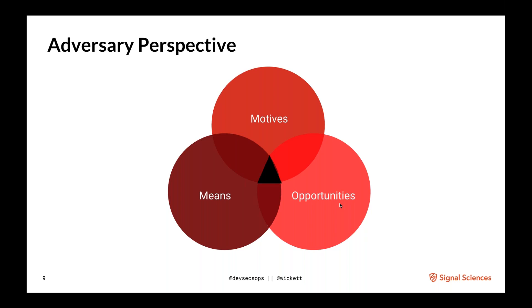This person was pushing back not because they thought I sucked as a security professional, but because they wanted me to think about the value I provide — helping make decisions about where to spend effort and balance objectives. When we looked at that together as a joint endeavor, I realized the conversation had to change: it wasn't just about checklists, but actually talking about what adversaries are interested in.